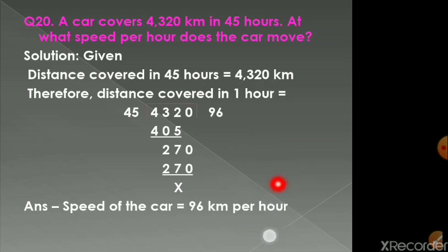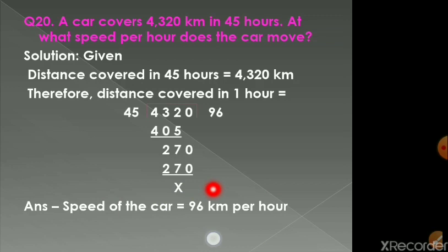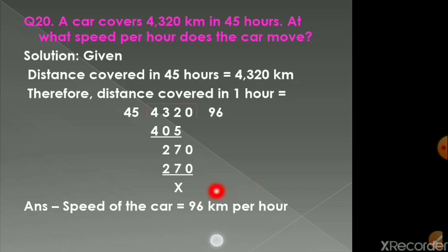The question asks for the speed of the car. The formula for speed is distance divided by time. Distance covered in 1 hour is 96 km, so the speed of the car is 96 km per hour — meaning the car covers 96 km every hour.